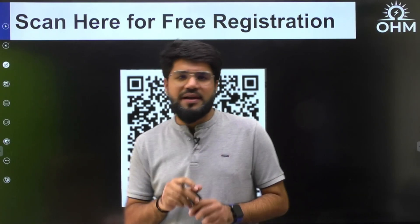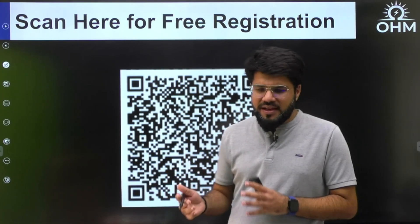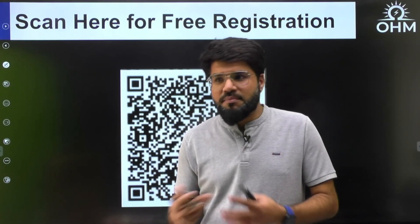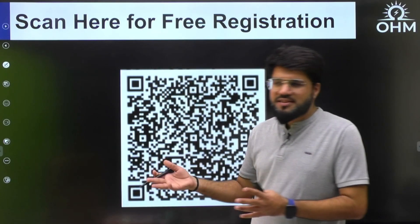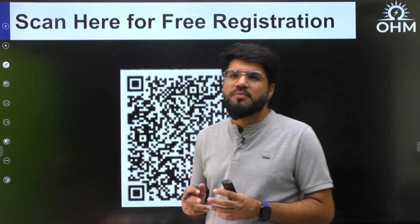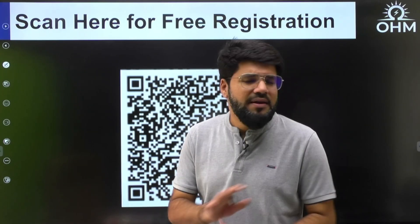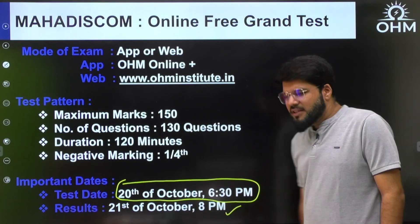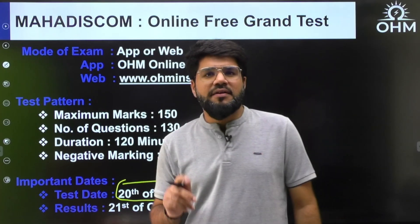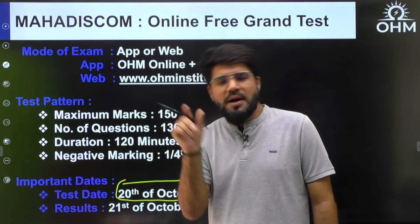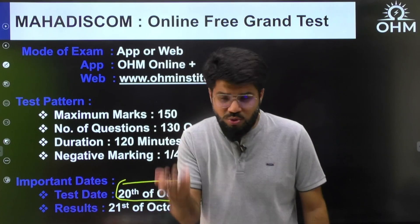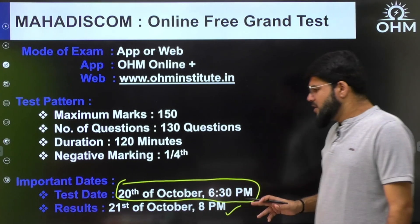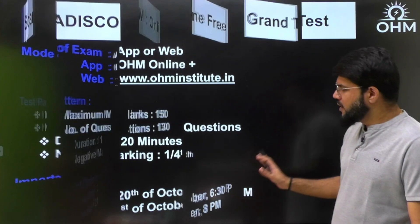Since this is a mock test, some students worry about their details being revealed. The results will show marks roll-number-wise — your name and contact number will not be revealed. Results will be available on 20th October at 8 PM, showing your roll number, marks obtained, and your rank, so you can assess your performance.